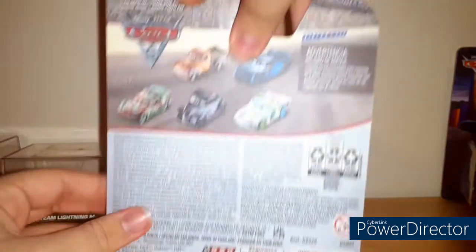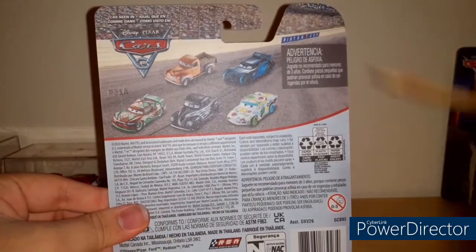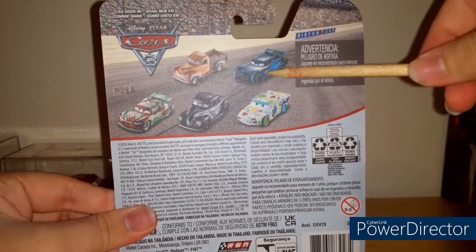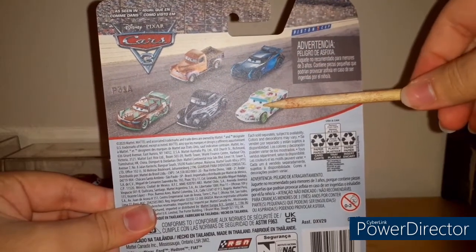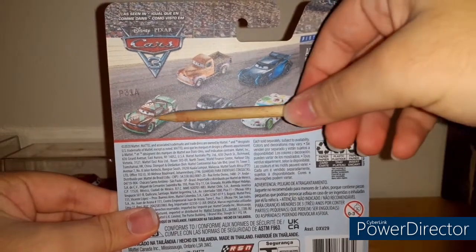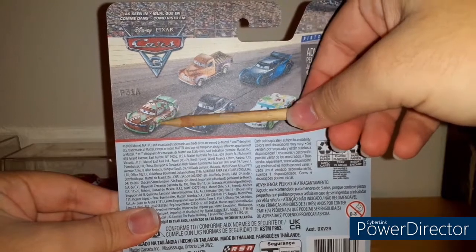Let's take a look at the back now. On the back it says as seen in Cars 3, we have Smokey, Jackson Storm, Jambalaya, Chimichanga, Hot Road, Junior Moon, and Sheldon Shifter.